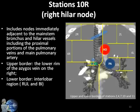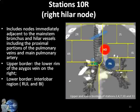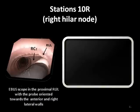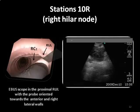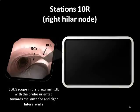Station 10R is immediately adjacent to the right main bronchus and hilar vessels, including the proximal portions of the pulmonary veins and main pulmonary artery. The upper border is the lower rim of the azygous vein, and the lower border is the interlobar region between the right upper lobe and bronchus intermedius. To visualize this hilar nodal station, the EBUS scope can be gently advanced from the carina to the origin of the right upper lobe bronchus, with the transducer oriented anterolaterally towards the 2 o'clock position. The lymph node is visualized in front of the normal lung, and hilar vessels may be encountered depending on exact lymph node position and scanning orientation.